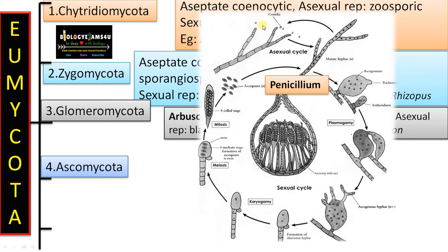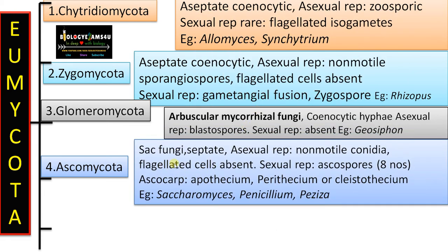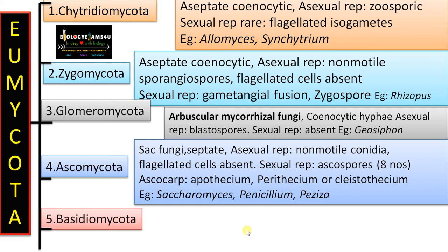To summarize Ascomycota: they have septate, well-developed hyphae. Asexual reproduction is by non-motile conidia formed in chains. Flagellated cells are absent. Sexual reproduction is by ascospores, typically eight in number, formed inside an ascus. Fruiting bodies include cup-shaped apothecium, flask-shaped perithecium, and closed cleistothecium. Examples include yeast (Saccharomyces), Penicillium, and Peziza.